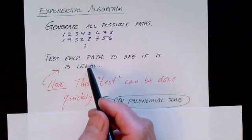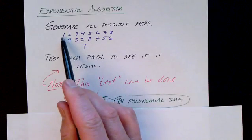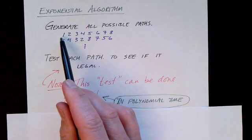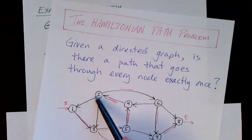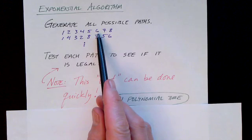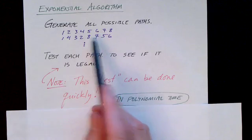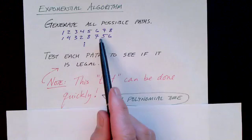And then we can just test each path to see if it's a legal path. That can be done in polynomial time. For example, we look at our graph and we ask, can we go from one to two, two to three? Well, if we look at our graph, we find that we cannot go from one to two. So right away we can rule out the first one.